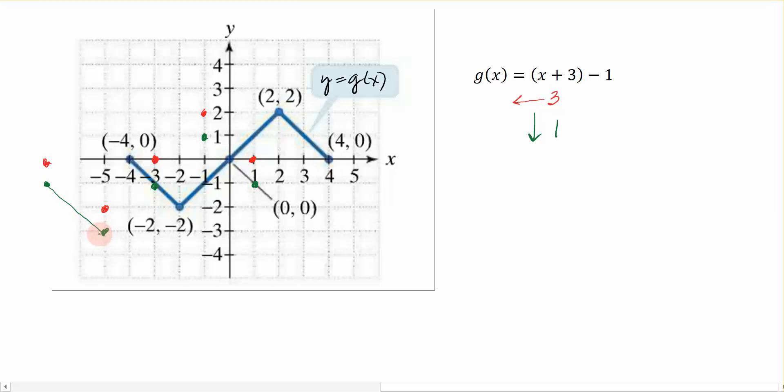So we're going to connect the green dots, we're going to go down, up, and down. So we're ending here. So the green equation, or not the green equation, the green graph is the graph of g of x at x plus 3 minus 1. And that's how we're going to do vertical and horizontal translations.